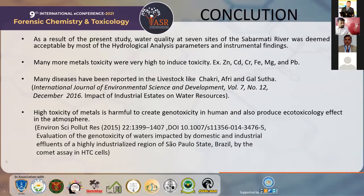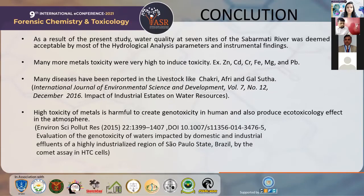In human beings, high toxicity of heavy metals is harmful and can create genotoxicity in humans, as well as produce ecotoxicity effects in the atmosphere. In this paper, the study was conducted using HTC cells. Currently, I am studying HepG2 cells to investigate how water from the Sabarmati, Pirana Dam, and Ahmedabad area can contaminate and produce genotoxicity. I am working on hepatocarcinoma C cells — liver cells — to determine the genotoxic potential of Sabarmati river water. Thank you.